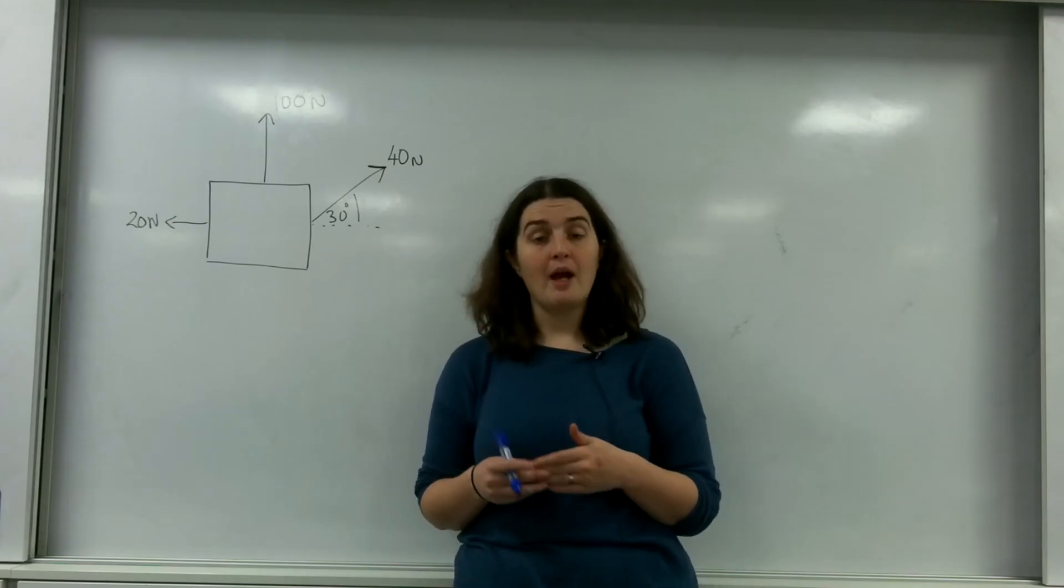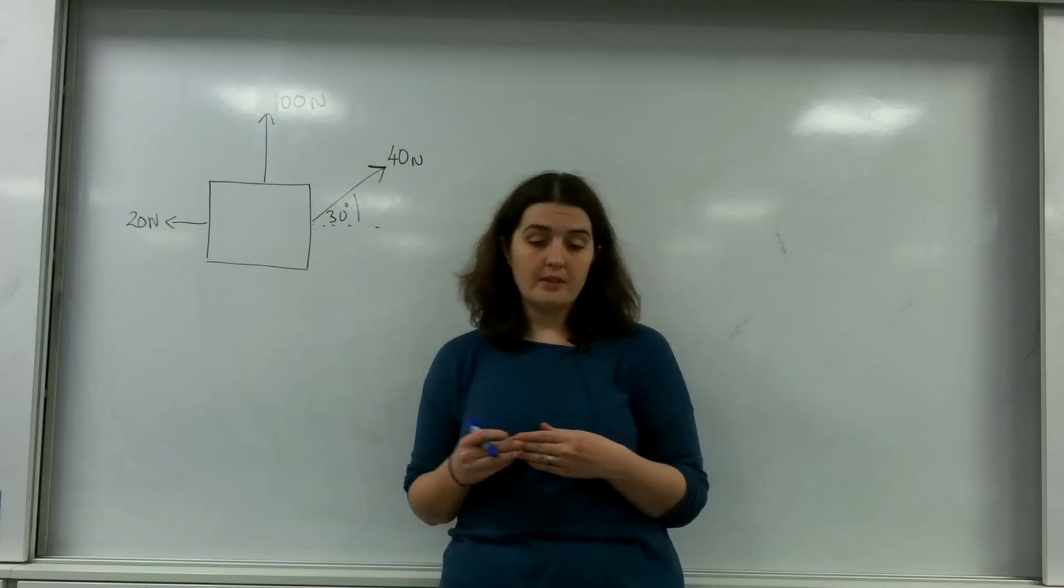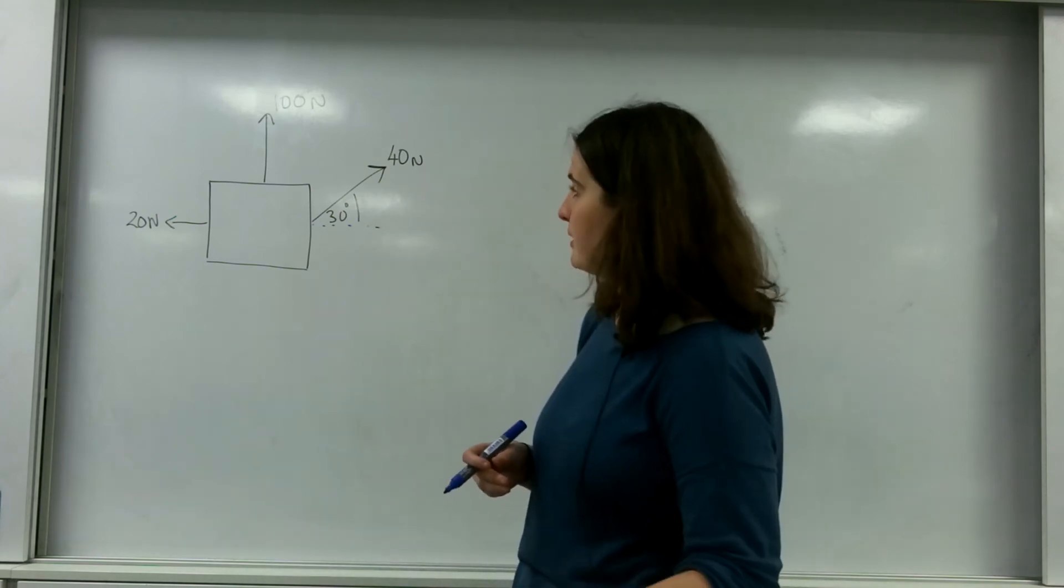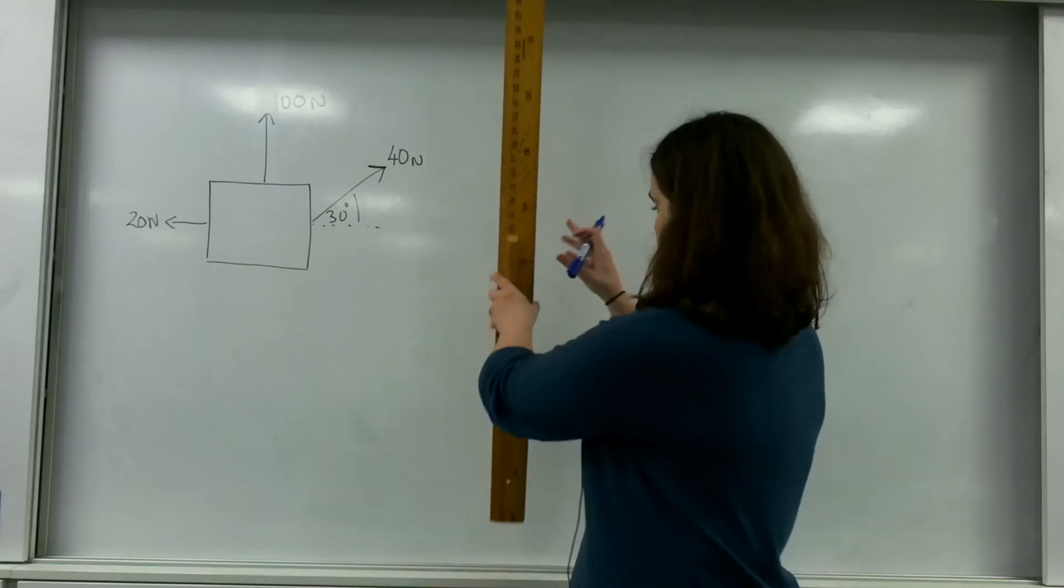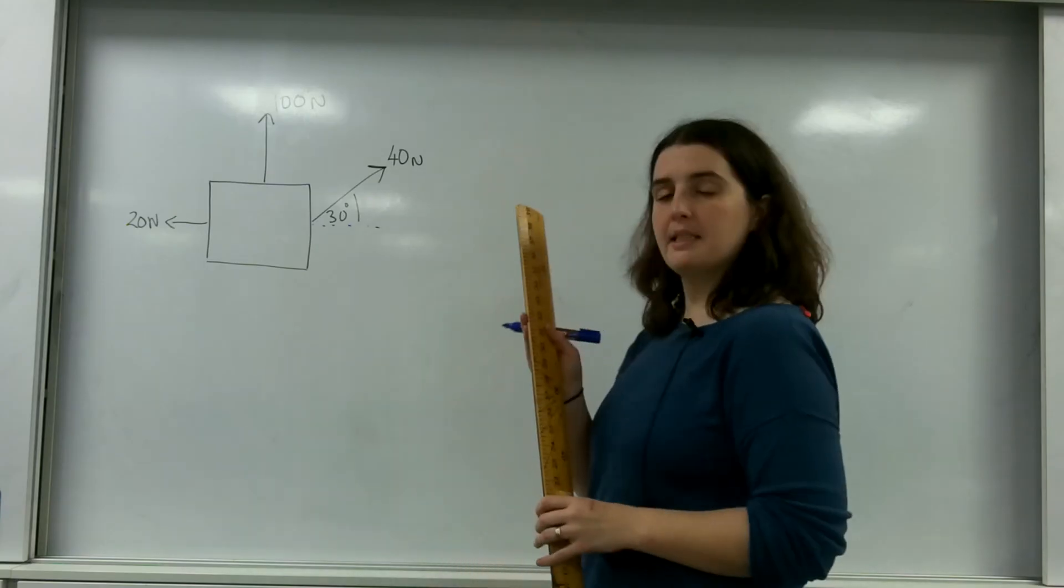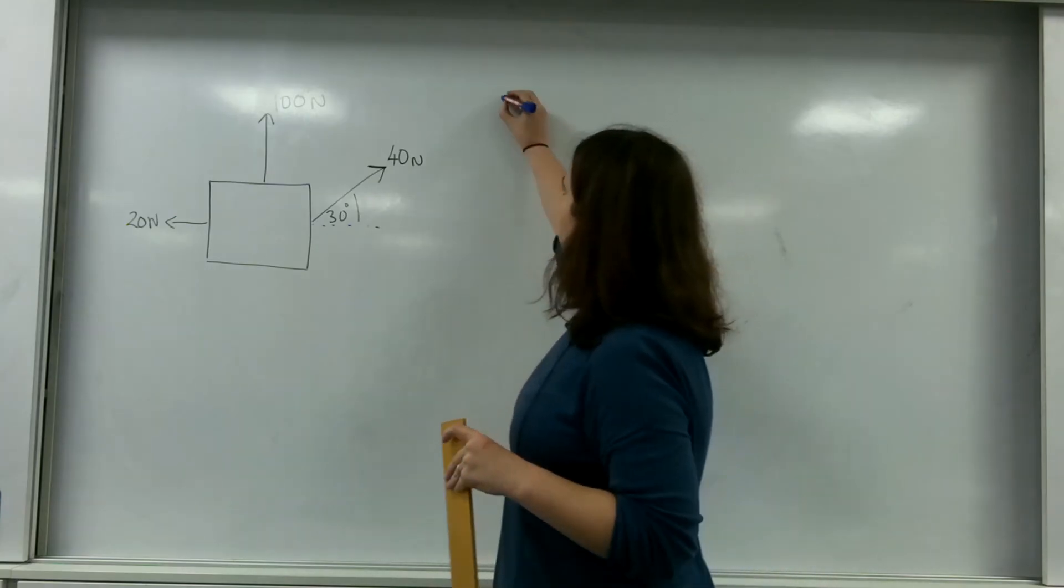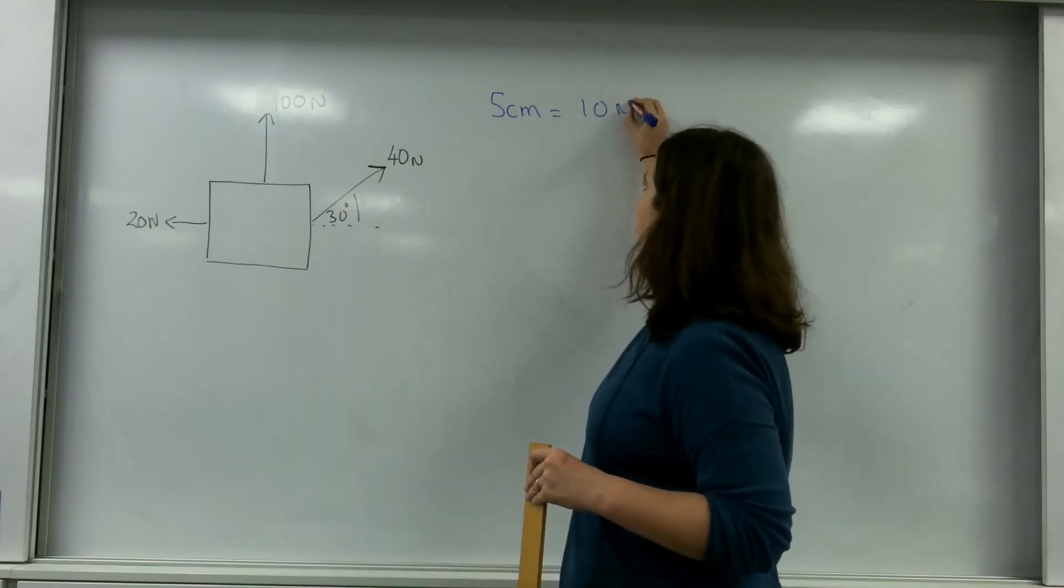So what you have to do is draw a vector diagram. The first thing I'm going to do is put a scale. I am going to say that 5 centimeters equals 10 newtons.